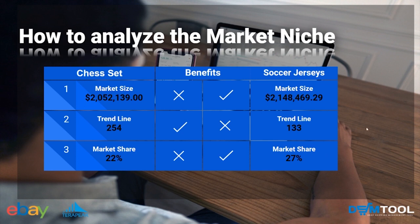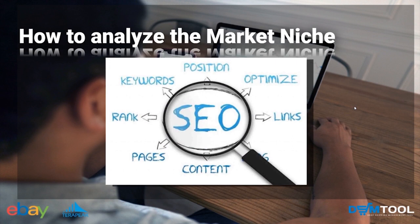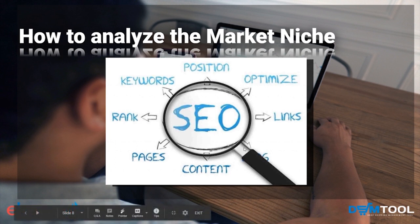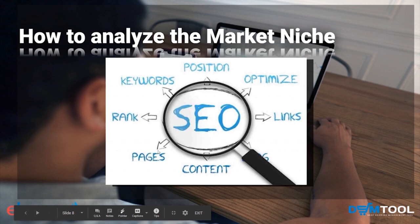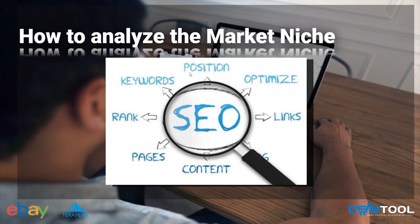Another key factor when analyzing a niche is active listings, tied to search engine optimization. SEO is about driving organic traffic into your store with no paid ads — minimizing costs, maximizing profits, and working on organic growth. It's about appearing in the first results of search results by optimizing your store. I'll recommend an article from the Dropship Academy in the description for more detail.